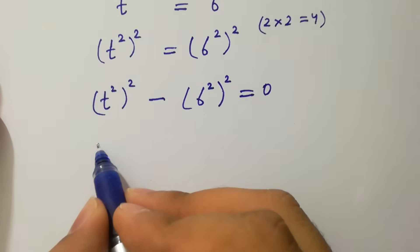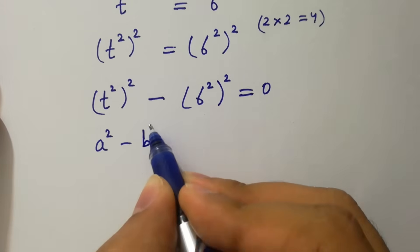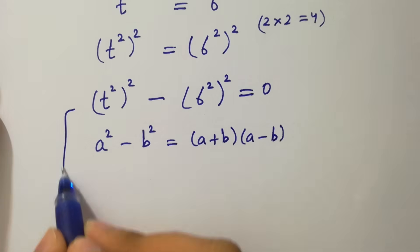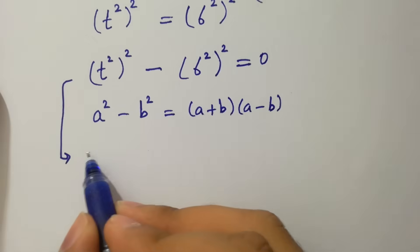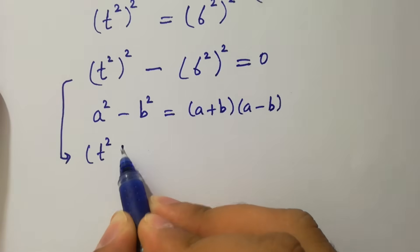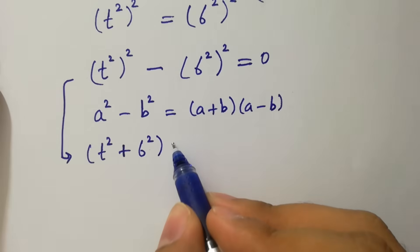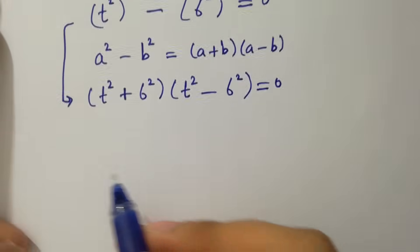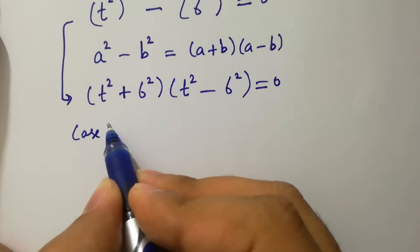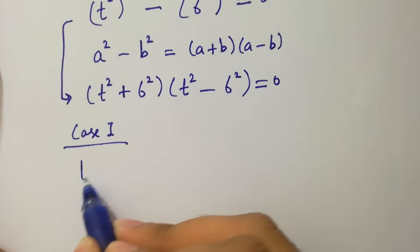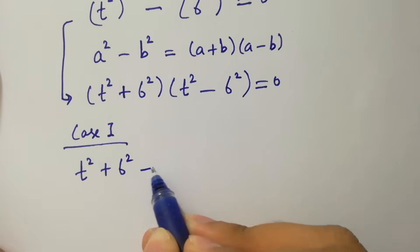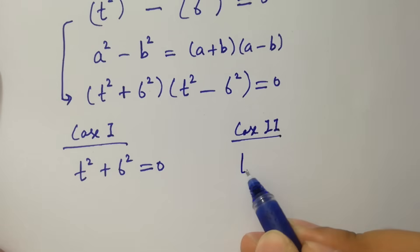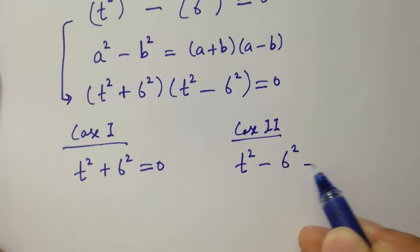By applying the formula a square minus b square equal to a plus b times a minus b, it will be t square plus 6 square times t square minus 6 square equal to 0. So we have two cases here. Case one is t square plus 6 square equal to 0.